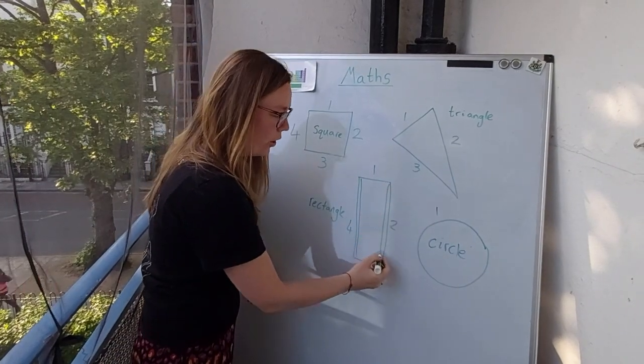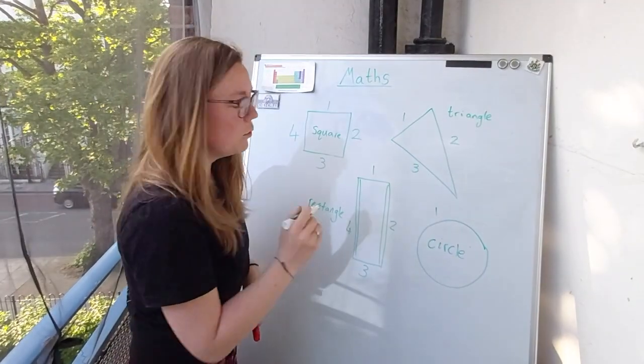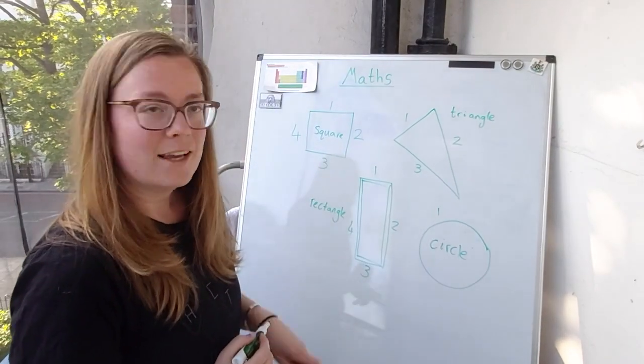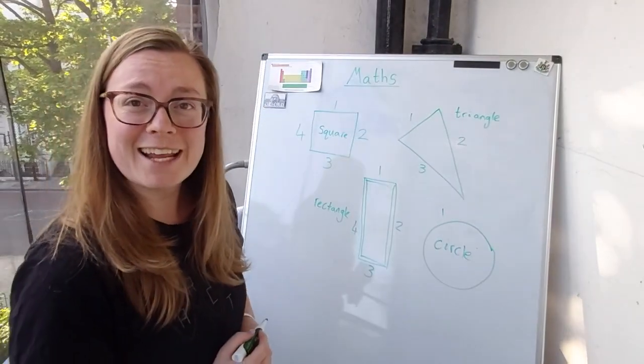A rectangle has two long sides and two short sides. Here's its two long sides. Two long sides. And it also has two short sides like this.